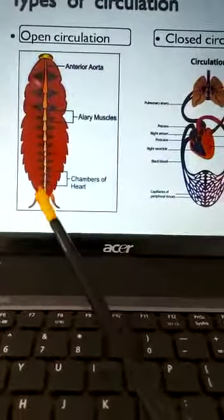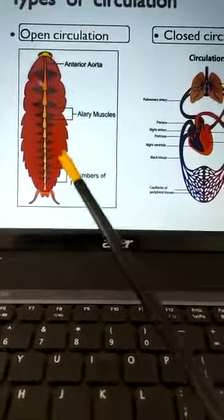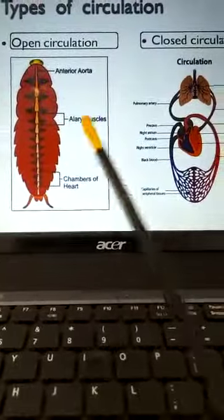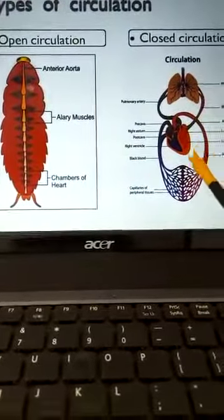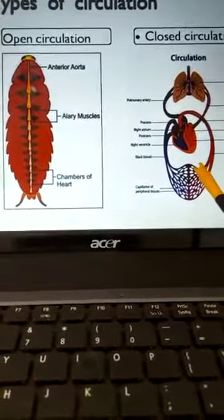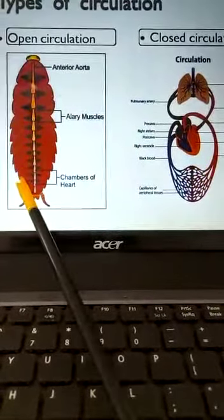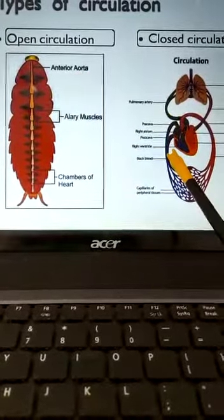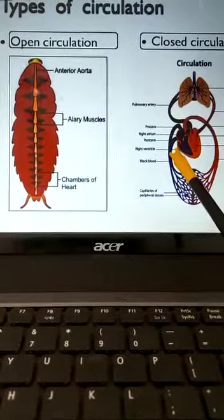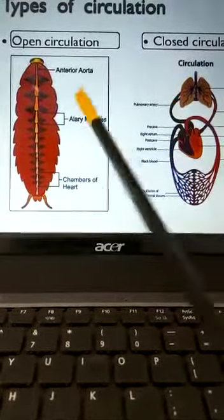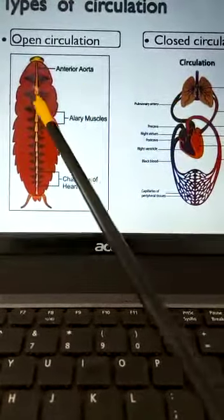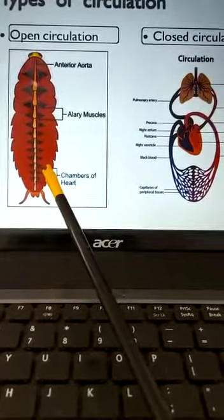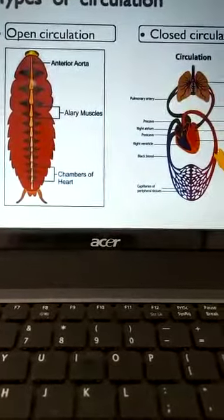In open circulation, blood is not enclosed in vessels so blood pressure is less. In closed circulation, blood pressure is high. There is no respiratory pigment in open circulation, whereas in closed circulation the respiratory pigment haemoglobin is present and blood transports respiratory gases like oxygen and carbon dioxide.